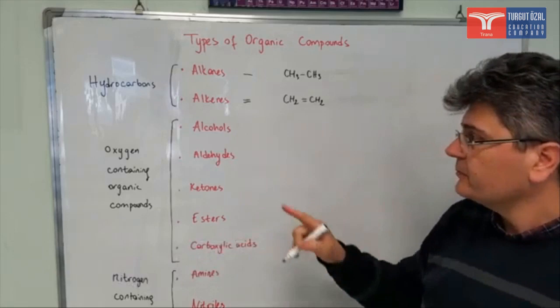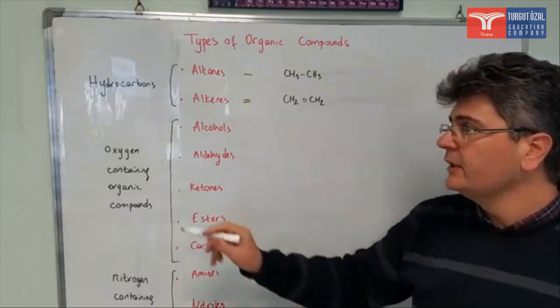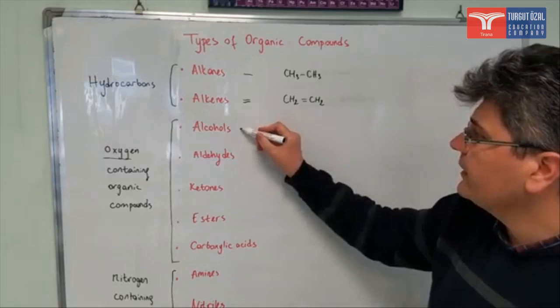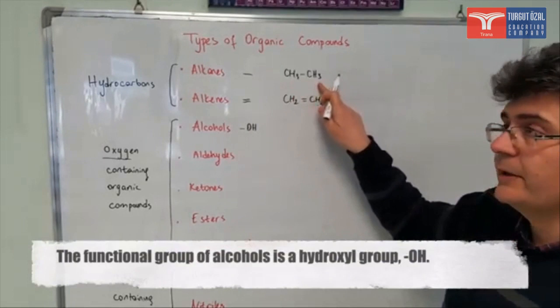Alcohols, aldehydes, ketones, esters and carboxylic acids are organic compounds which contain an extra element, which is oxygen. So they contain oxygen along with carbon and hydrogen. The functional group of alcohols is an OH group. So if you take one hydrogen out from an alkane and add an OH group, what you get is an alcohol.